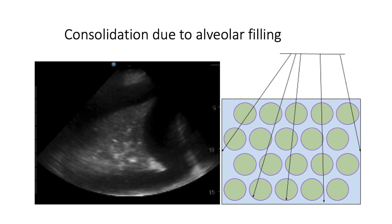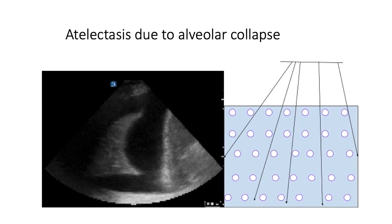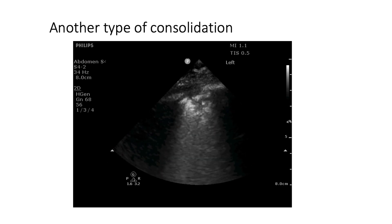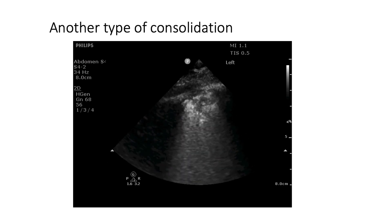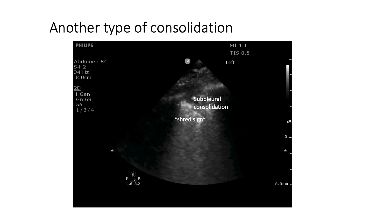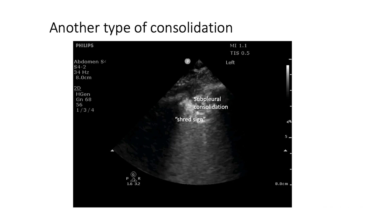Consolidation can occur due to alveolar filling or alveolar collapse. With alveolar filling, sound waves penetrate lung tissue well, producing a tissue pattern — the lung looks a bit like liver, often described as hepatization. We can see the diaphragm, lung with tissue pattern, as well as effusion. A similar appearance can occur due to atelectasis, which also enables sound waves to pass through tissue, producing a lung tissue pattern. Another important type is the subpleural consolidation, located just below the pleura, with an adjacent shred sign and B lines just distal to it.